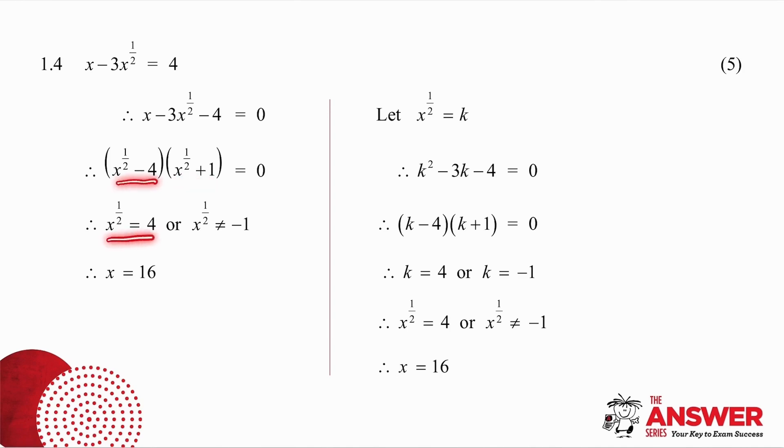Two brackets multiply to give you 0, so one of them must be 0. So either x to the half is equal to 4 or x to the half is equal to minus 1. But if I think about it, remember x to the half is the same as root x. And in a previous video, we said root x, by definition, has to be positive, which means x to the half cannot equal minus 1. So my only solution is x to the half equals 4. Square both sides, and I get that x is equal to 16. Now I know in this solution I can square both sides, but I'm not allowed to do that, because by definition, x to the half has to be positive. It cannot ever equal minus 1.